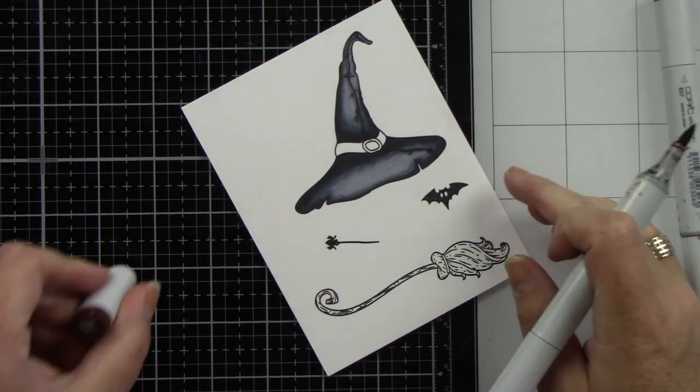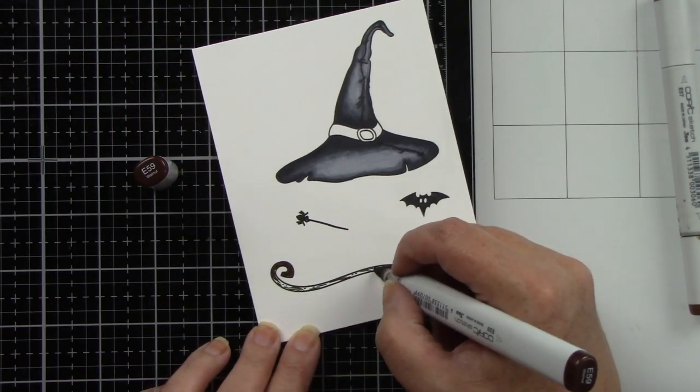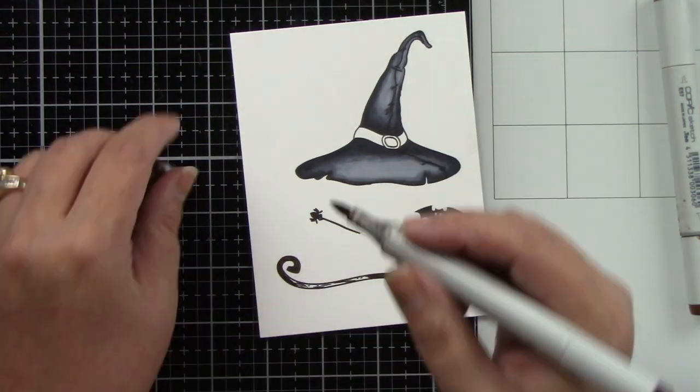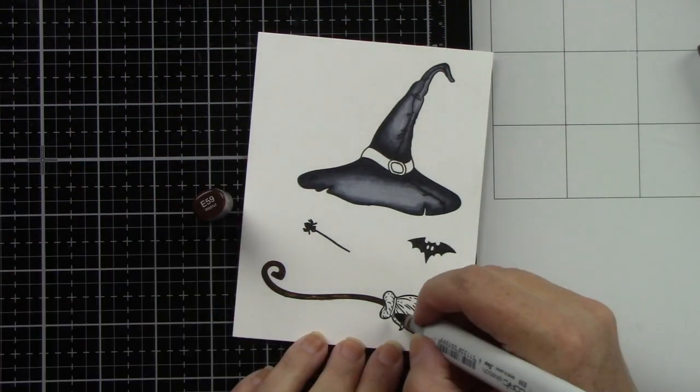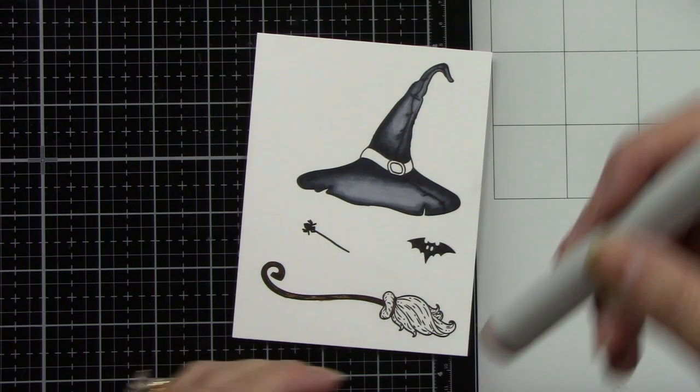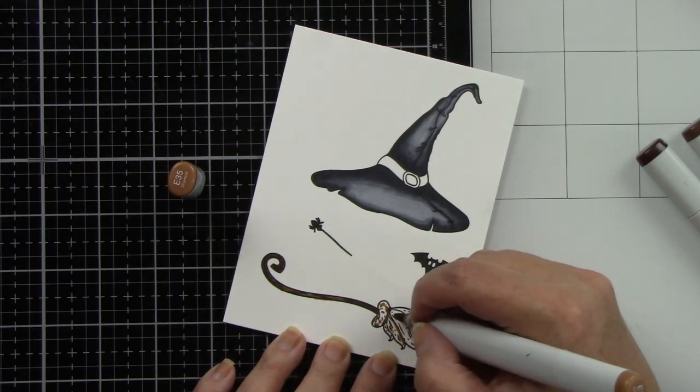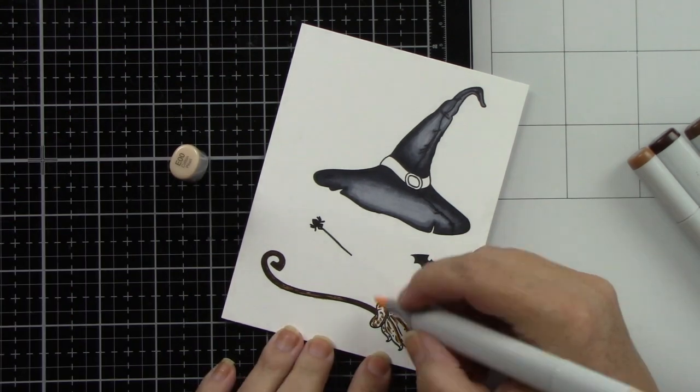I want to have a little bit of purple on the witch's hat. Of course we need the broom, which is going to be brown—I've got two browns here and then a lighter brown for the sweepy part of the broom.